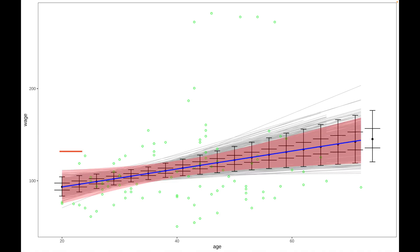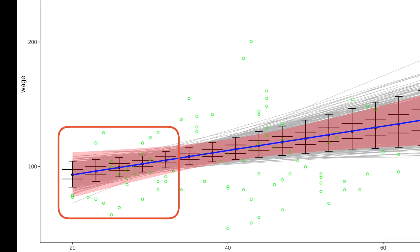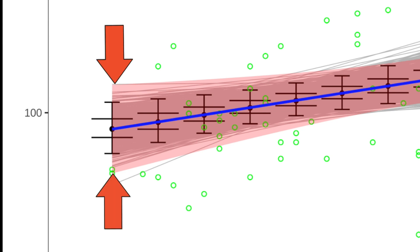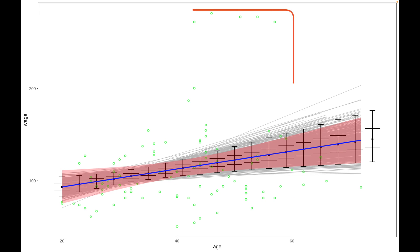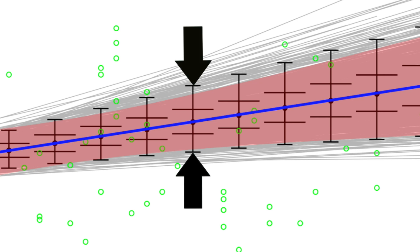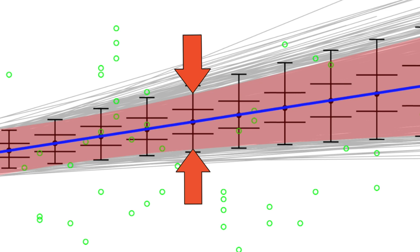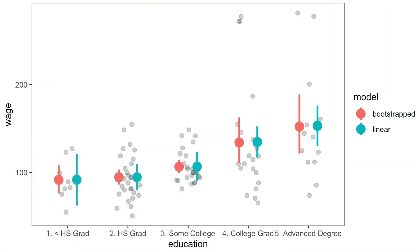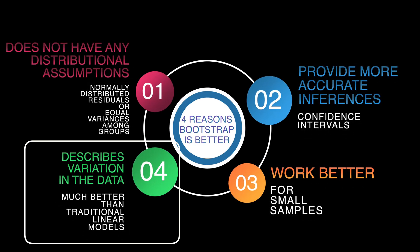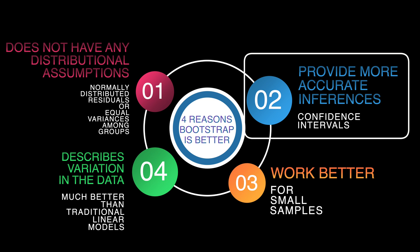As we can see again, low variance in salaries at the beginning of professional life is described with narrower confidence intervals by the bootstrap predictions compared to ordinary linear regression. While larger variance in salaries after the age of 45 is described by the bootstrap predictions with wider confidence intervals compared to ordinary linear regression. Similarly to the categorical predictor, we see that bootstrap results better describe the variation in the data and produce more accurate and realistic inferences.